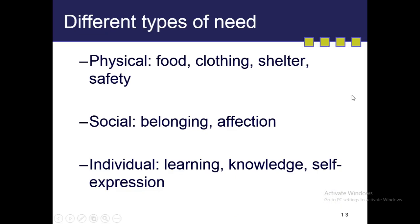Now, there are many types of needs. There are physical needs: food, clothing, shelter. There are some social needs. In social needs, there are belongings, affection, love, and others. These are also our needs.